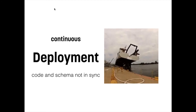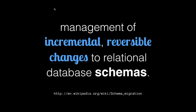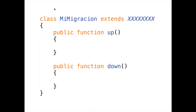So the idea is to start talking about schema migrations. It's basically the management of incremental, reversible changes to relational database schemas. In practice, a database schema migration is a class that has two methods: one is 'up' and one is 'down'. When you execute a migration, you're executing the up method. When you do a rollback, you're executing the down method.